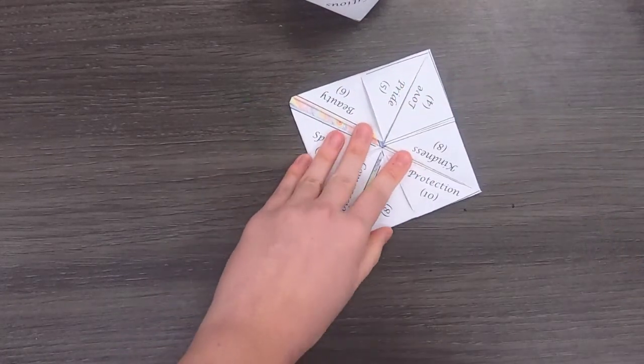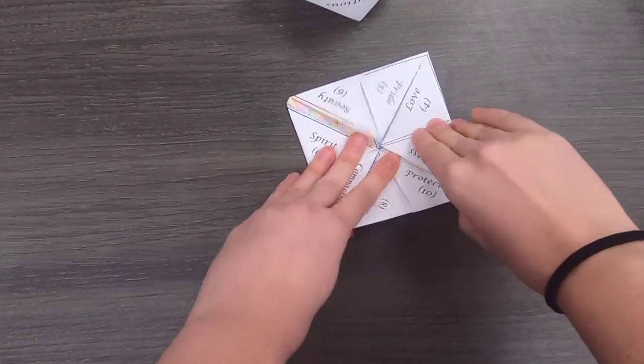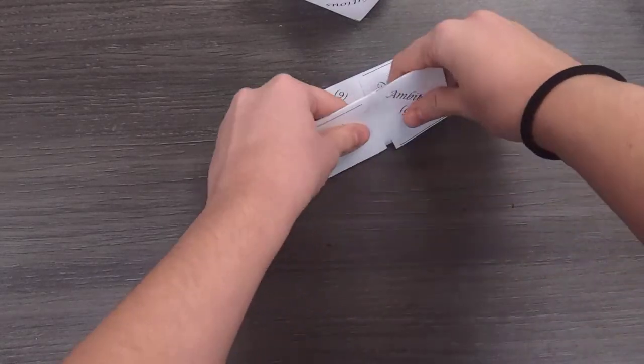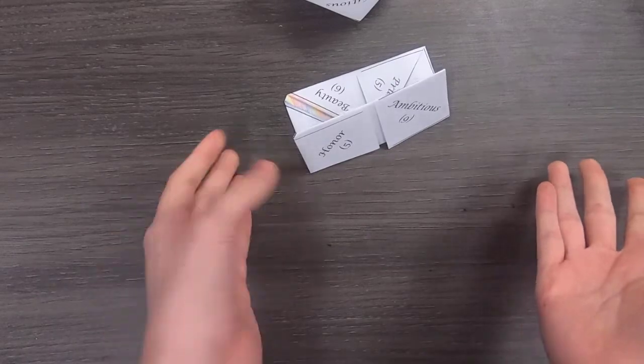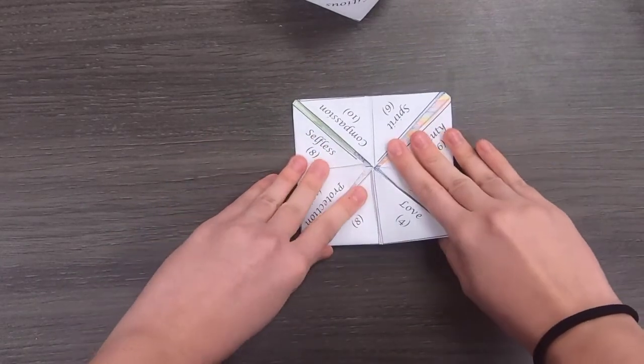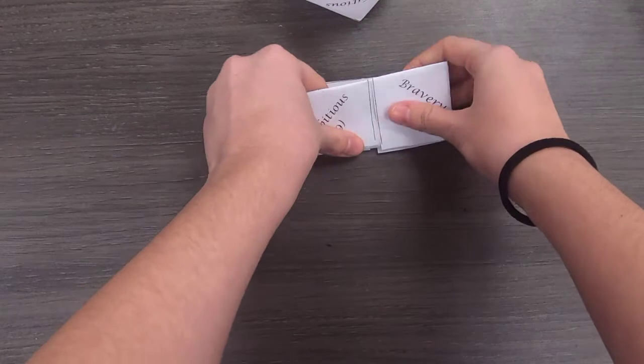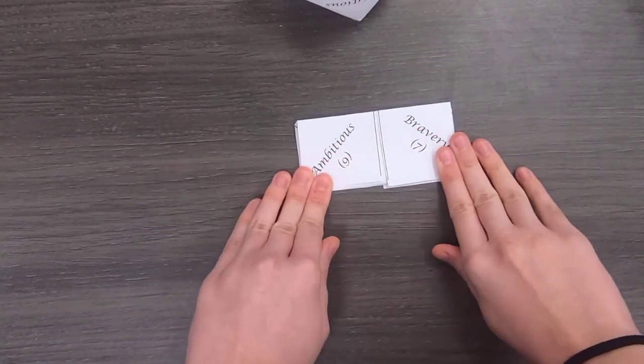And then from here, you're basically done with the initial fortune teller. So all you have to do is make two creases. One like this. Just fold it in half along the line. And then fold it out. And then fold it in half again across the other line.